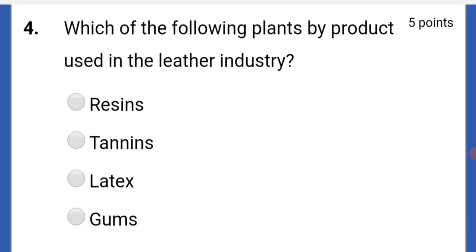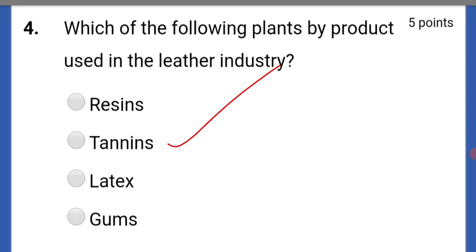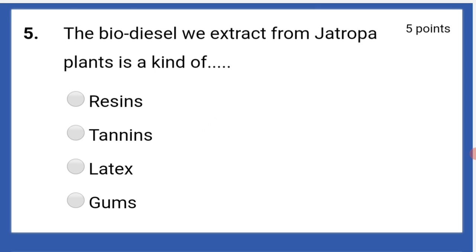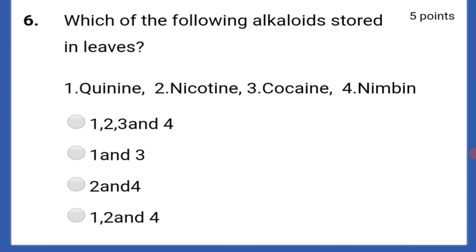Which of the following plants' byproduct is used in the leather industry? That is tannins. The biodiesel we extract from the jatropha plant — its byproduct is latex.